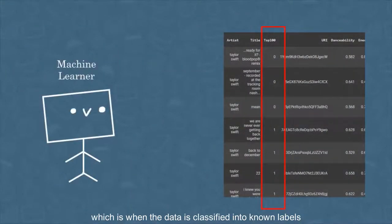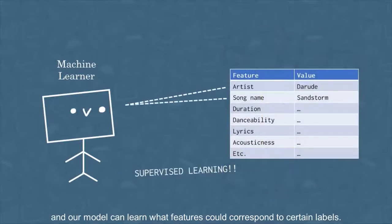This Top 100 label allows us to perform what is called supervised learning, which is when the data is classified into known labels, a hit or not a hit for our case, and our model can learn what features could correspond to certain labels.